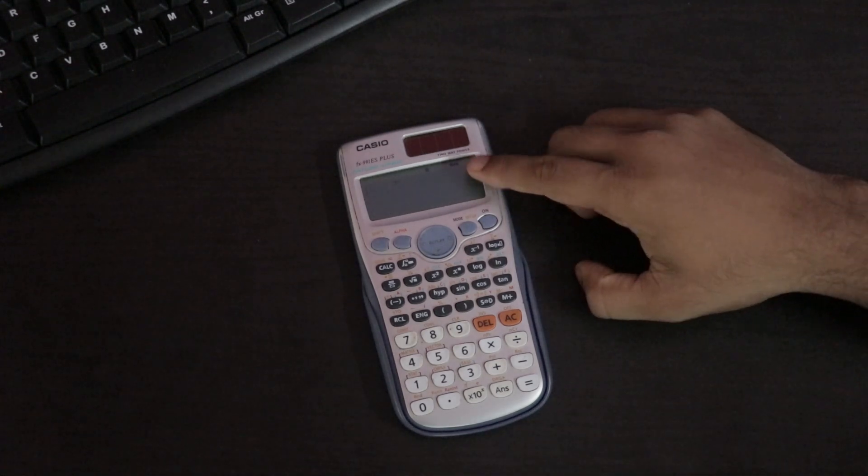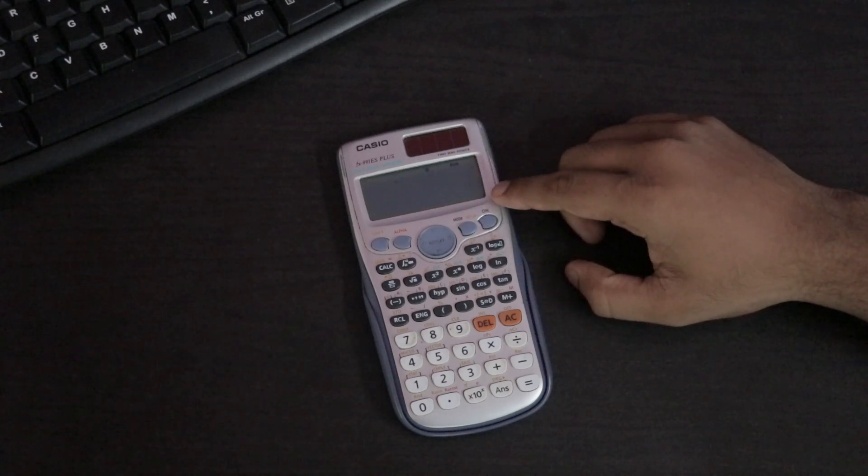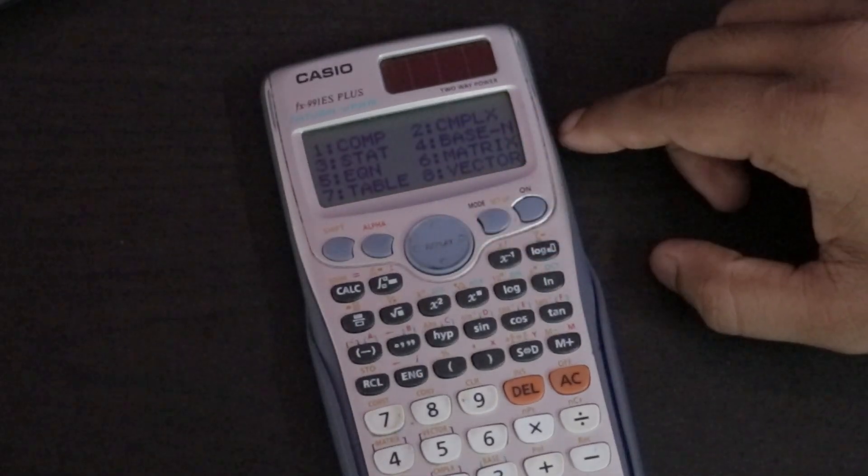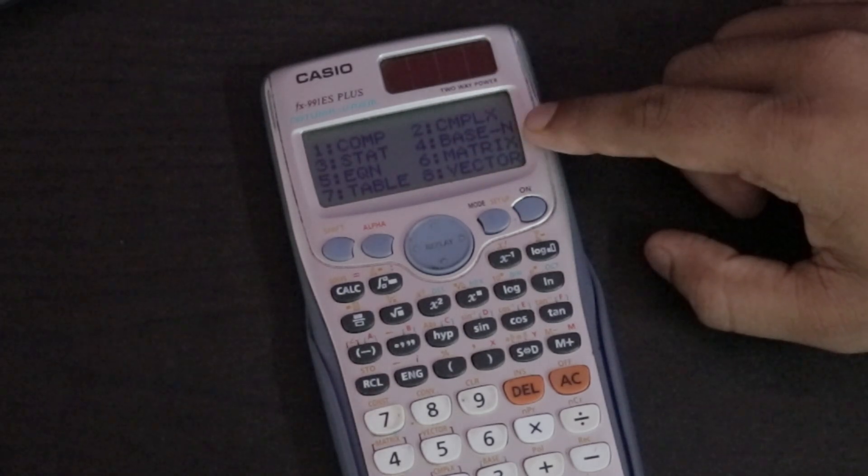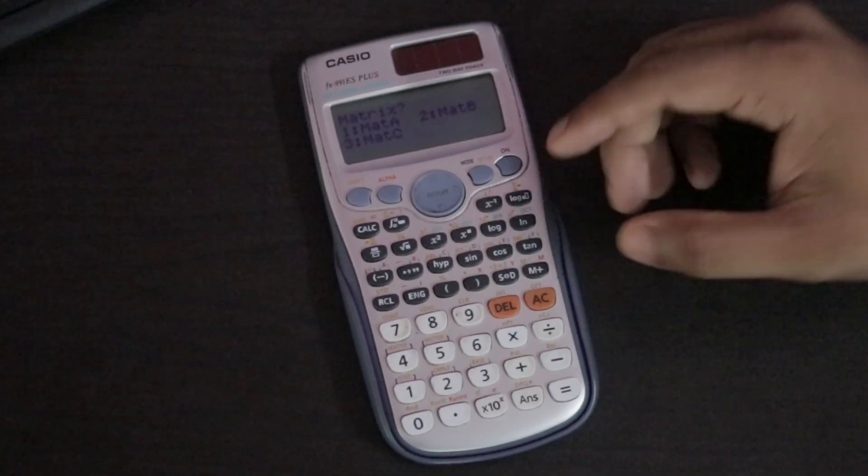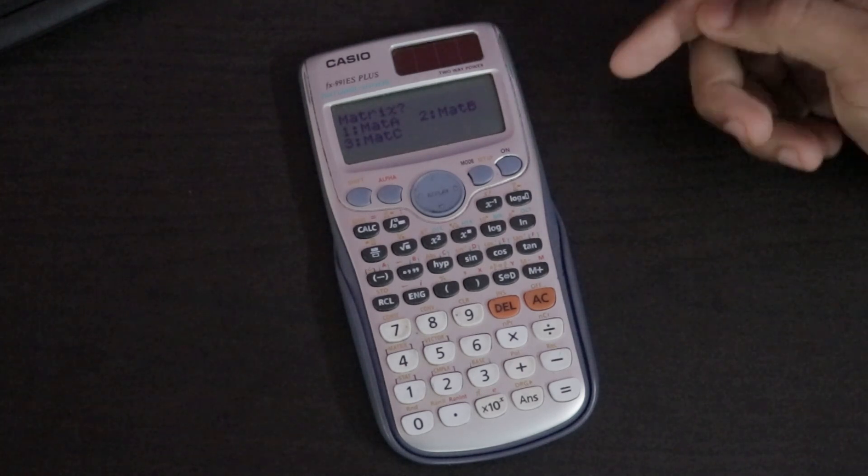We have to store the elements of matrix A and matrix B in the calculator. For doing that, right now my calculator is in math mode, so we need to change it into matrix mode. Click on mode. There is a sixth option here called matrix. Just click on that. Then our calculator is switched to matrix mode. This is the necessary step we have to do.